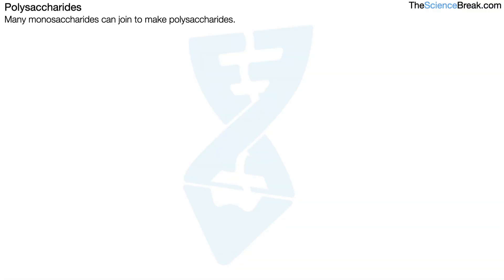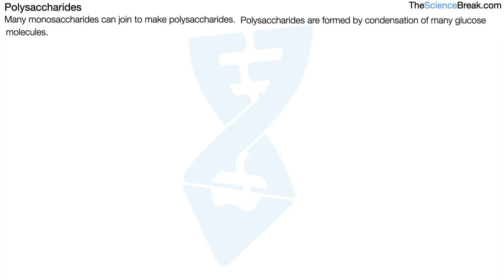Many monosaccharides can join to make polysaccharides. Polysaccharides are formed by the condensation of many glucose molecules. Examples of polysaccharides are starch, glycogen, and cellulose, and we need to know the detailed structure of each of those.